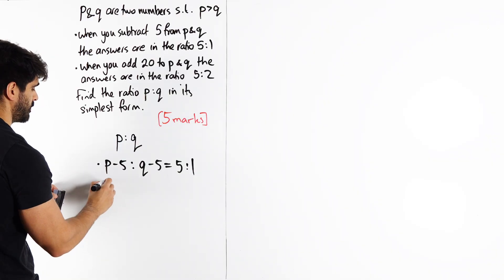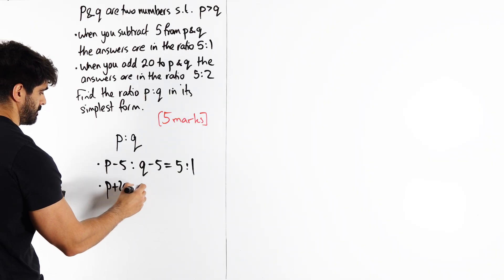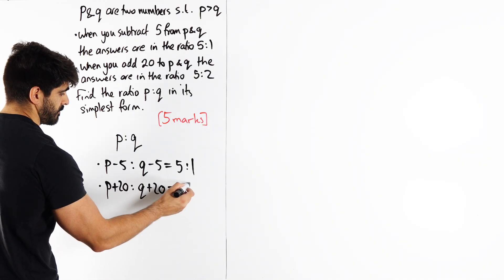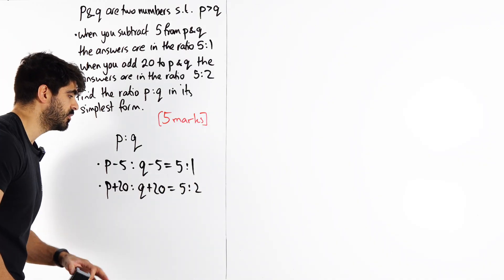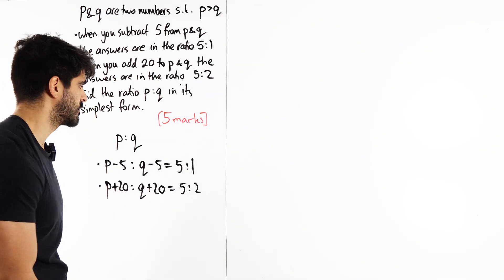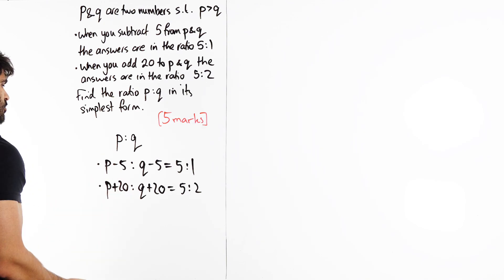And if we add 20 to both, the ratio becomes 5 to 2. With these two, we need to somehow find out P and Q. What is this giving you vibes of? Well, should be giving you vibes of simultaneous equations. We have two equations, two unknowns.